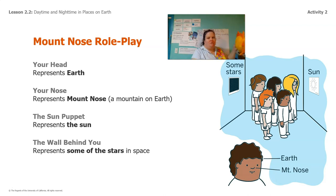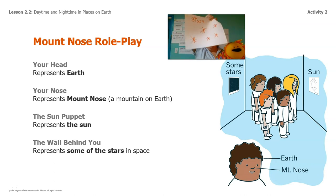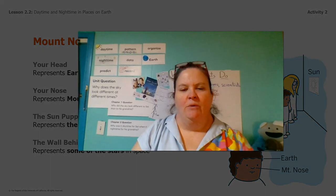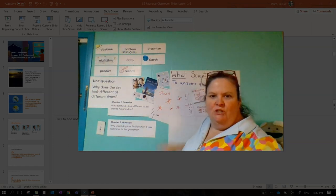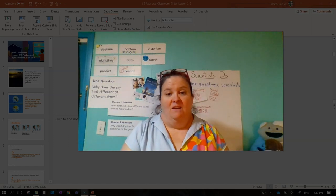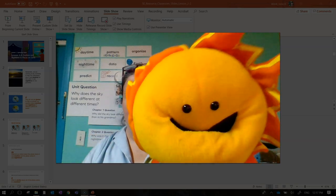I'm going to use my sun puppet to be the sun. I also took a piece of paper and drew some stars on it, and I'll put it on the wall behind me. If you have paper and a pencil, you can make a star sign too, or you can just pretend there are stars behind you. The sun is in front of us and the stars are behind us.